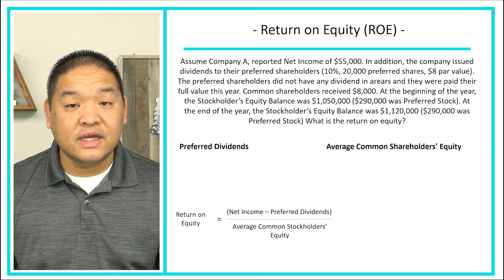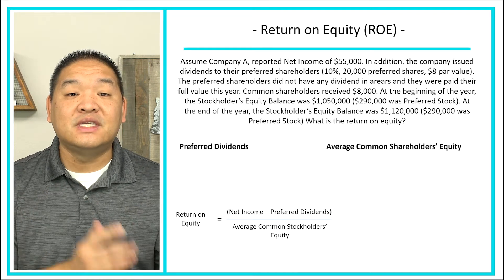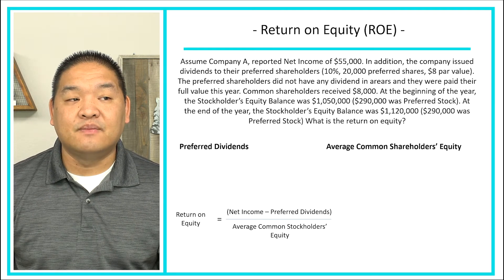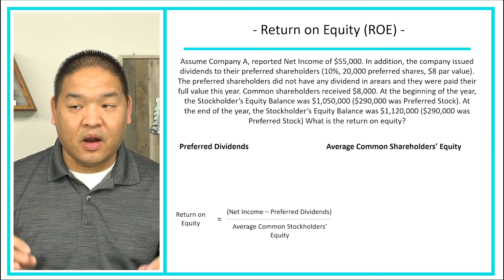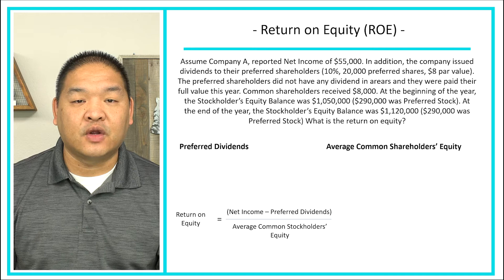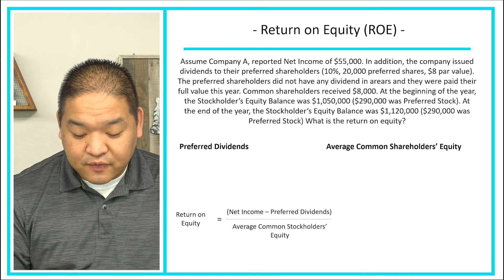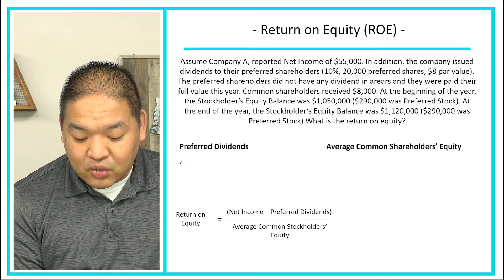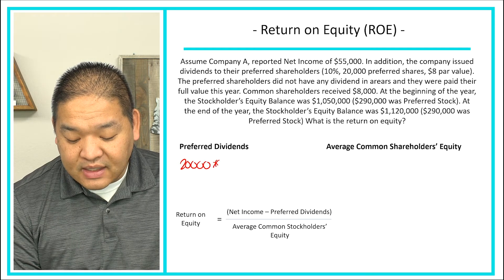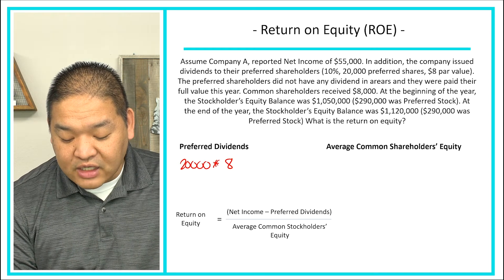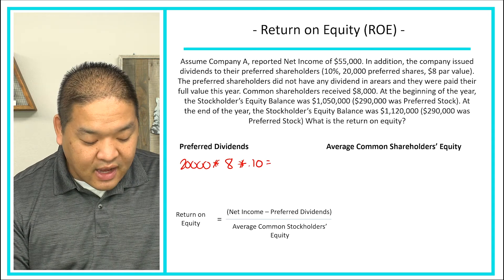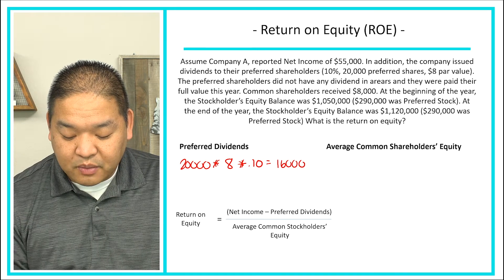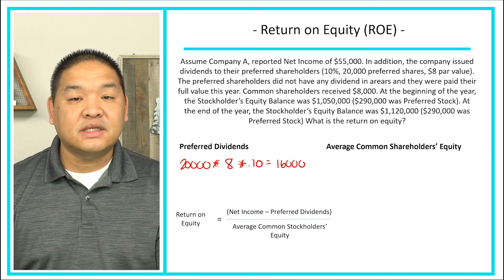The first thing to calculate is the preferred dividend, since that feeds into the numerator as net income minus preferred dividends. To get the preferred dividend, we take 20,000 shares multiplied by the $8 par value times 10% dividend rate, which gives us $16,000. That is our preferred dividend amount.